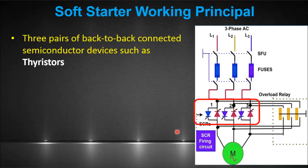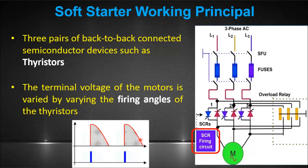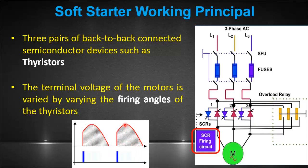Soft Starters utilize three pairs of back-to-back connected semiconductor devices, such as thyristors or silicon-controlled rectifiers (SCRs), as the primary switching elements. These thyristors are switched alternatively to reduce the terminal voltage and inrush current. The terminal voltage of the motors can be controlled by varying the firing angles of the thyristors, as can be seen in the figure.